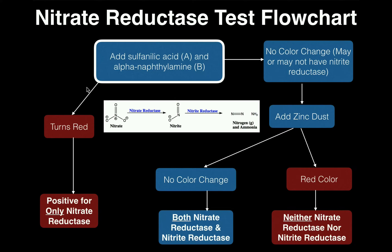The easiest case is when, after you add those 16 drops of each reagent, the solution immediately turns red. After adding these two reagents, if we get an immediate color change to red, that means we have the simple result: positive for only nitrate reductase. That means we have the first enzyme but lack the second, nitrite reductase.